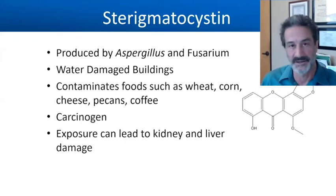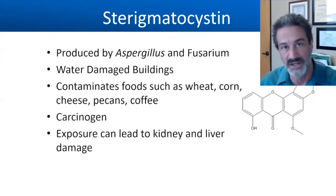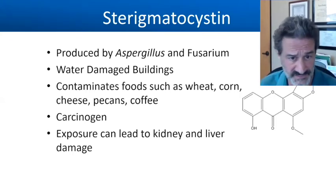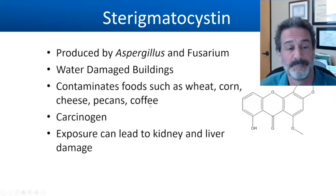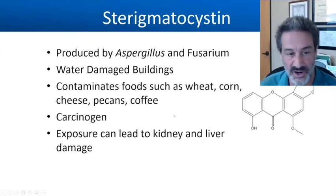STG is produced by aspergillus and is more likely to be from water-damaged buildings, though it can be in food. Mold in grains, nuts, and anything that's stored — it's not that the food got too moldy sitting on your counter. We're talking about moldy in the field before it was harvested, moldy in the silo, or somewhere along the line, and then it gets blended into products where you can't even see it. Most of these are immunosuppressive and/or carcinogenic, with kidney and liver damage from STG.